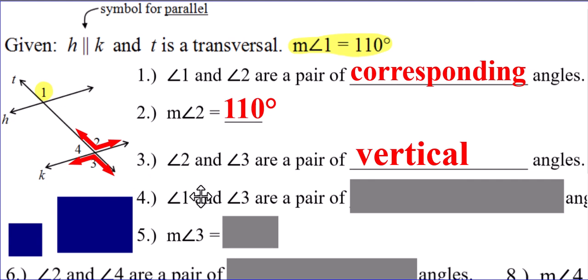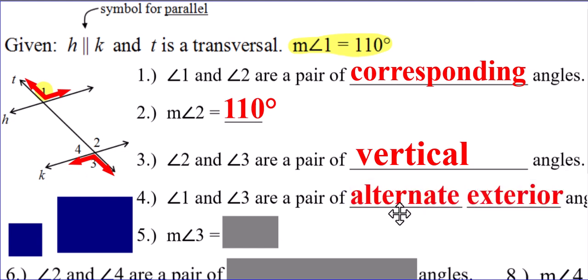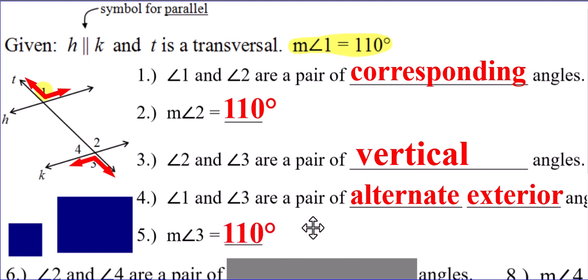What about problem number four? Angles one and three — they are a pair of something angles. Angle one was this guy way up here. Angle three — they're both outside of the parallel lines, meaning above and below, and they're opposite corners on the outside of the parallel lines. That has a name: alternate exterior angles. And why do we care? Alternate exterior angles are congruent. So we already knew angle one was 110 degrees and angle two was 110 degrees. Angle three is congruent to angle two because of vertical angles, and congruent to angle one because of alternate exterior angles. So angle three is also 110 degrees.